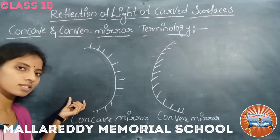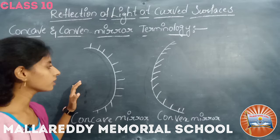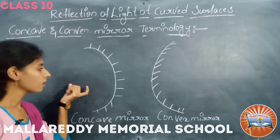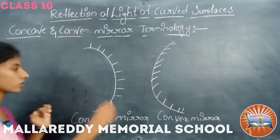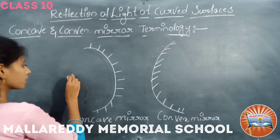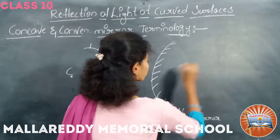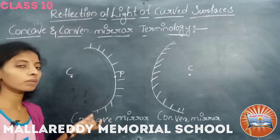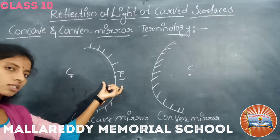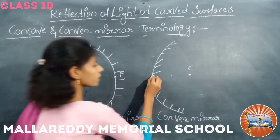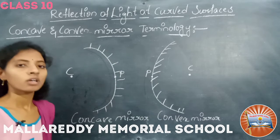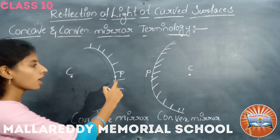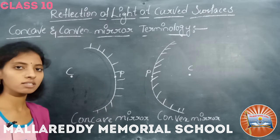A spherical mirror is assumed to be a part of a sphere. This sphere is having a center, which is known as the center of curvature, and it is represented by capital C. The mirror also has a point called the pole, represented by capital P. An imaginary line passing through the center of curvature and the pole of the mirror is known as the principal axis.